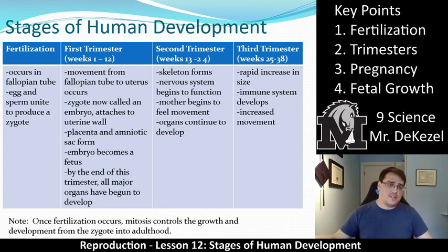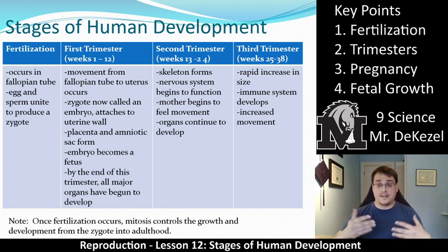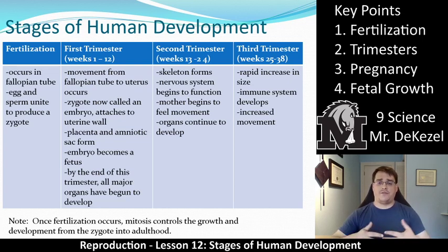Stages of human development — the first step is fertilization. As you know from the last lecture, this occurs in the fallopian tube. The egg goes from the ovary into the fallopian tube, and the sperm travels through all the different structures we talked about to fertilize the egg. The egg and sperm unite to produce a zygote, which then goes into the uterus and implants. Once fertilization occurs, mitosis controls growth and development from the zygote into adulthood — no more meiosis except in the testes and ovaries.